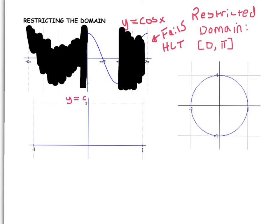This is going to be y equals inverse cosine. So I'm just going to flip the x and y coordinates. 0 comma 1 becomes 1 comma 0. π/2, 0 becomes 0, π/2.